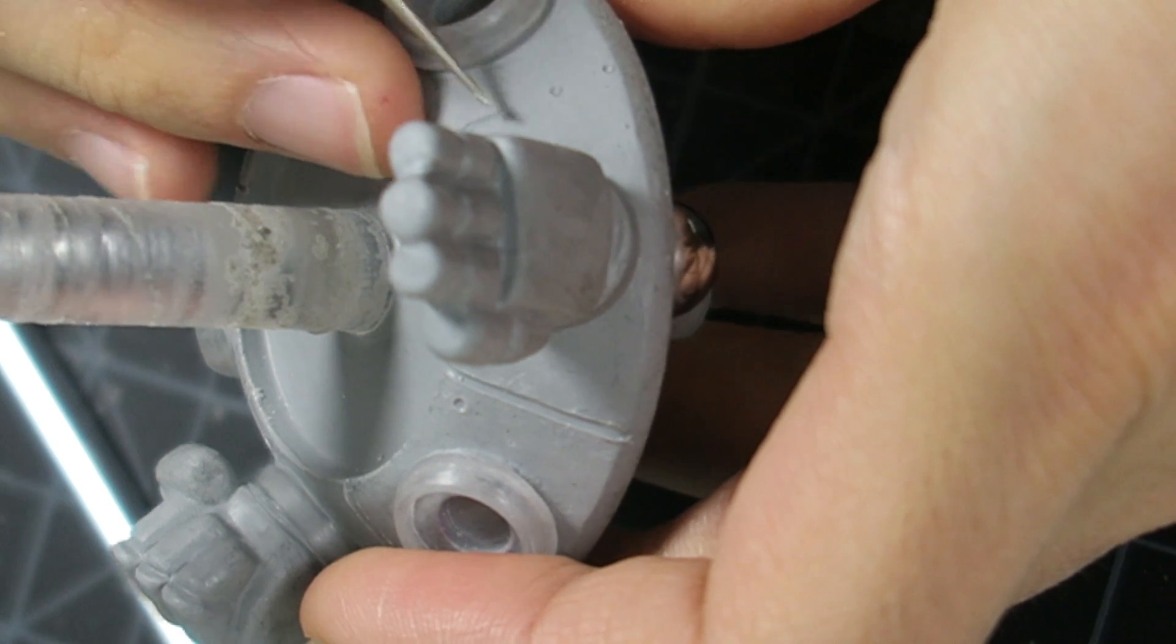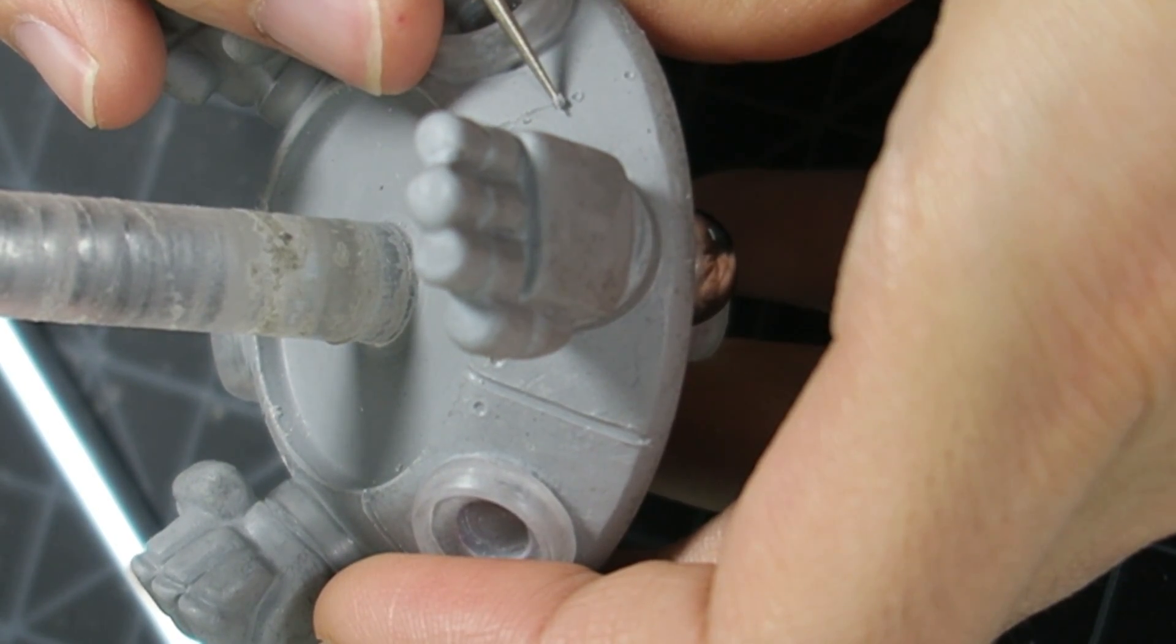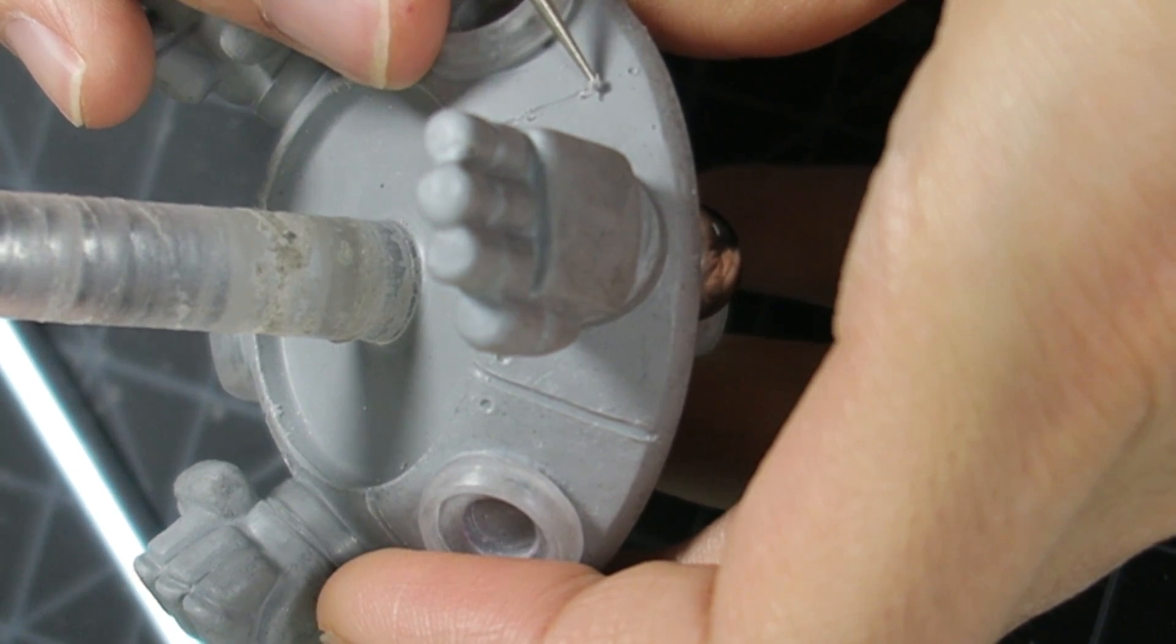In order to carve straight lines I can poke a few dots and then slowly connect them. That way I don't have to carve it in one go. This helps keep me from wavering off the line.